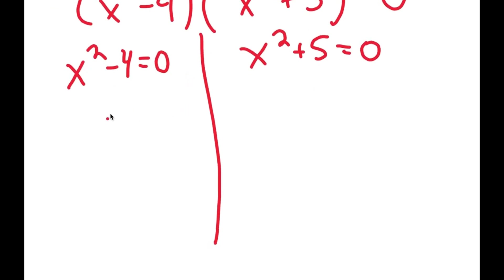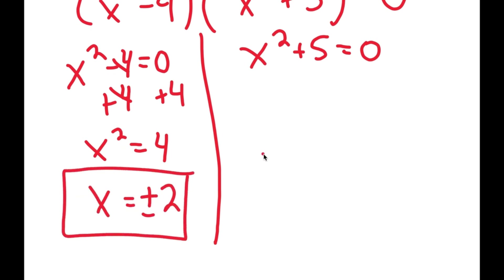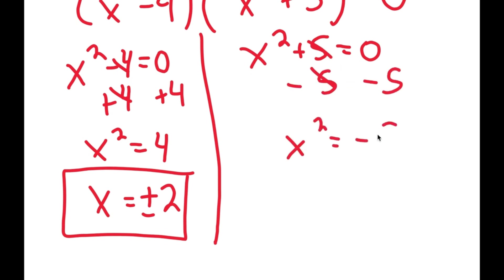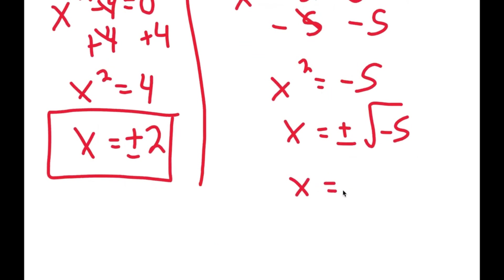For x squared minus 4 equals 0, I can add 4 on both sides. So I get x squared is equal to 4, and this is equal to positive or negative 2. And for x squared plus 5 is equal to 0, I get x squared is equal to negative 5. And I get x is equal to positive or negative square root of negative 5, which is equal to positive or negative square root of 5 times i.